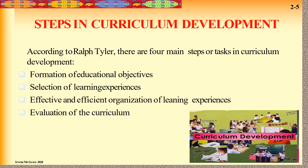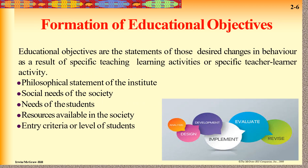When we talk about curriculum development, the major role is Ralph Tyler's model, which describes four steps: formulation of educational objectives, selection of learning experiences, effective and efficient organization of learning experiences, and evaluation of the curriculum. Formation of educational objectives is based on foundations of education: psychological, philosophical, sociological, and political. We create statements to observe and change student behavior, because the major definition of education is the change in behavior.